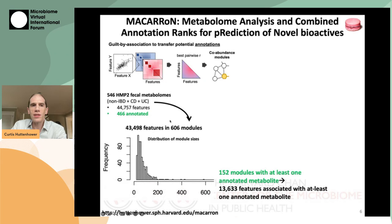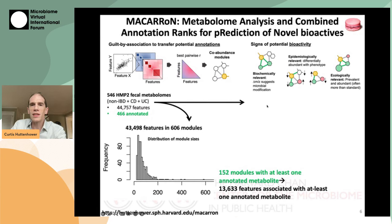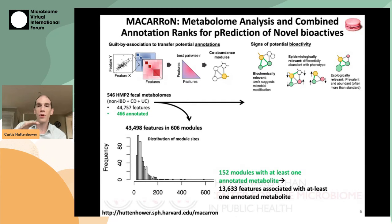Of these 600 or so total modules, a subset of 150 contained at least one annotated metabolite. Those 150 modules spanned nearly 14,000 total chemical features, giving us the opportunity to transfer information from annotated metabolites to unannotated ones. Macarone integrates a few different evidence types in addition to co-variation: one is changes in mass relative to an anchor compound. If you are slightly heavier or lighter than that anchor, you are probably some biotransformation — adding a hydroxy group, a ketone group, a methyl group, and so on relative to the anchor compound.